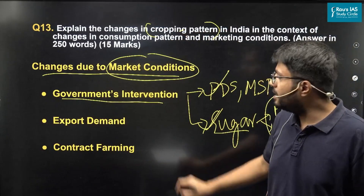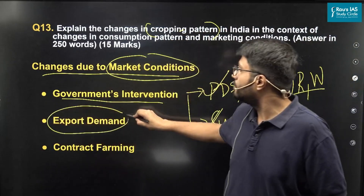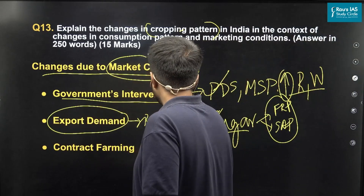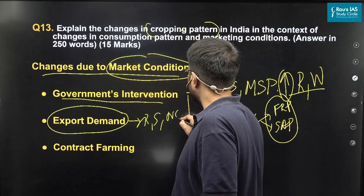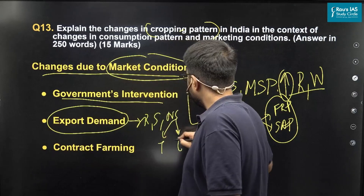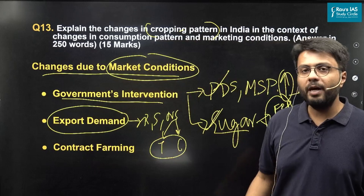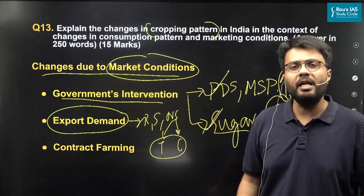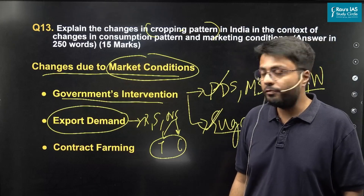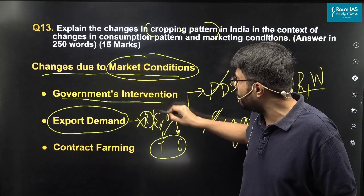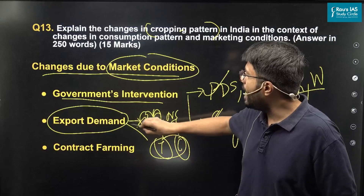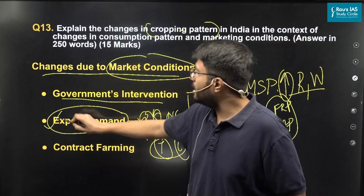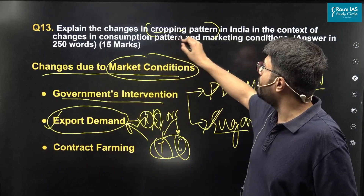Also important is the role of exports. Products such as rice and sugar, as well as non-crops such as tea and coffee, have seen increased demand in Western markets like the USA and UK as well as markets in the Middle East. Therefore, farmers are growing these kinds of crops so that they can export and earn more money. Hence, export demand can also influence cropping patterns.